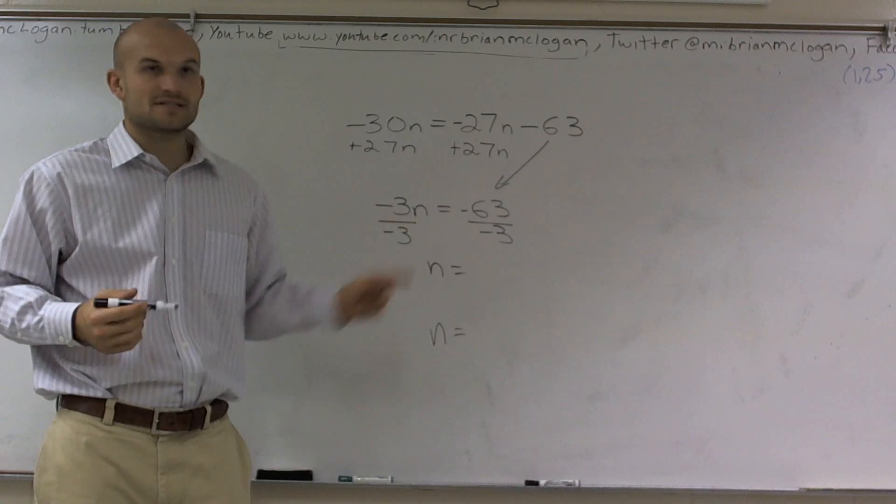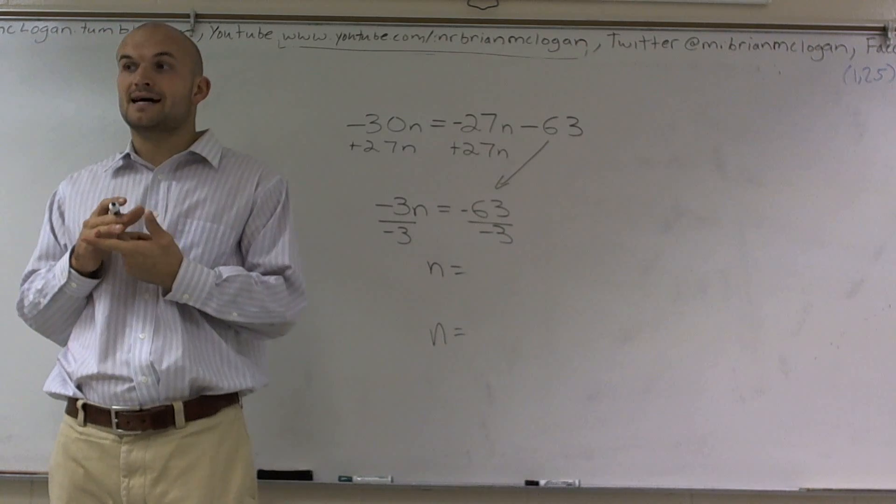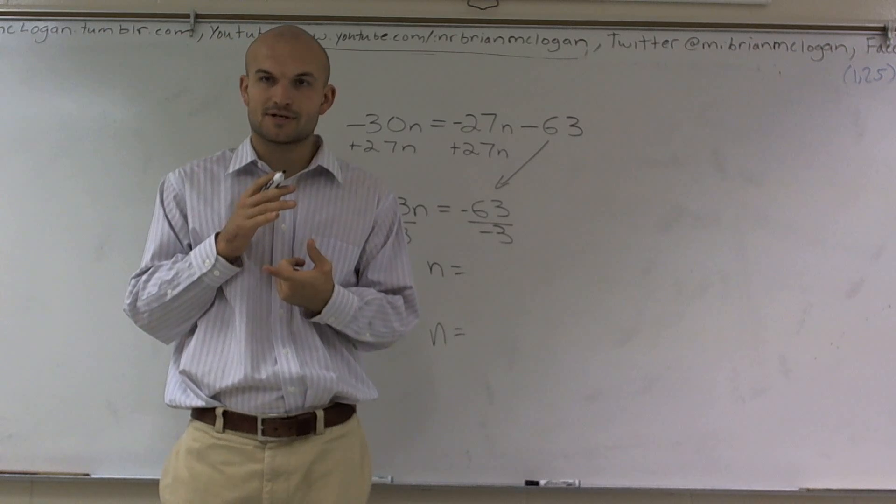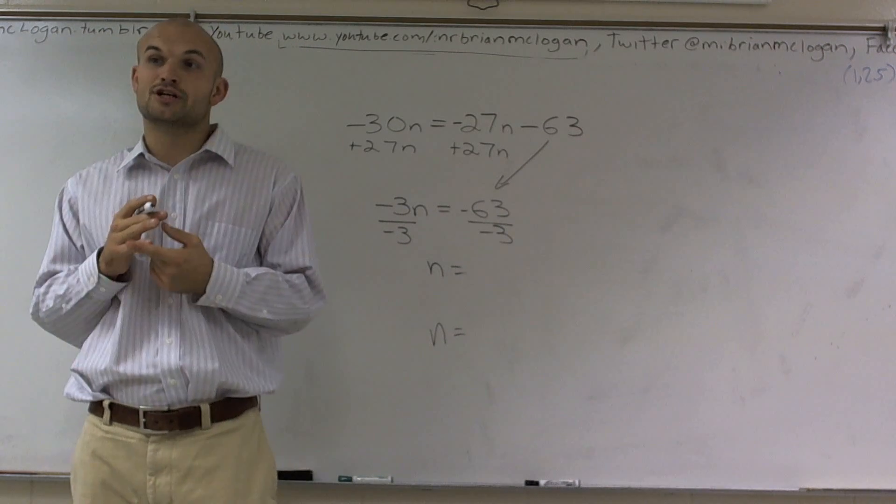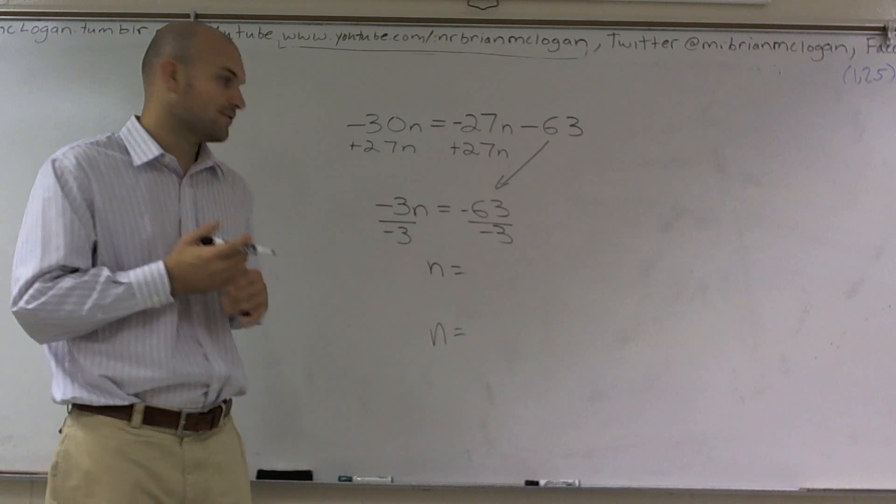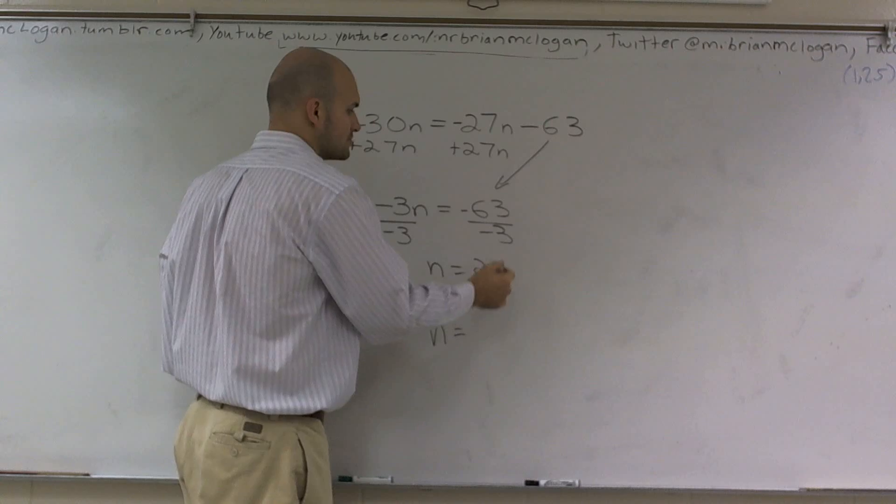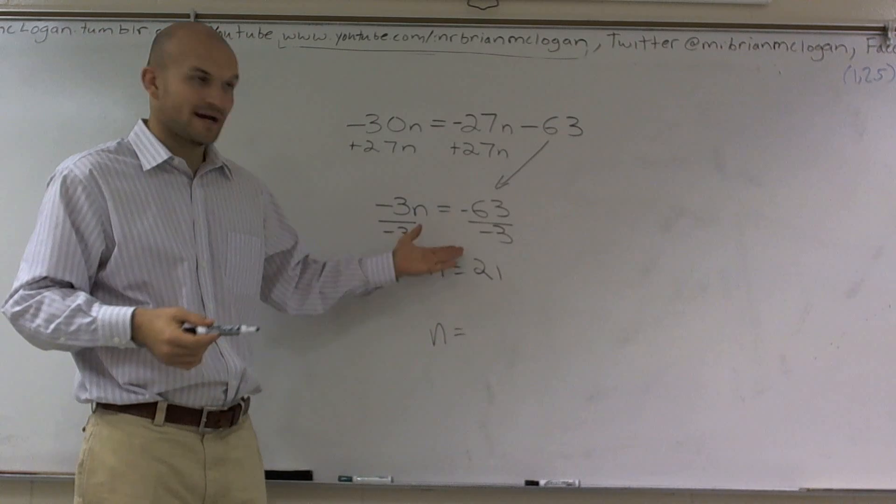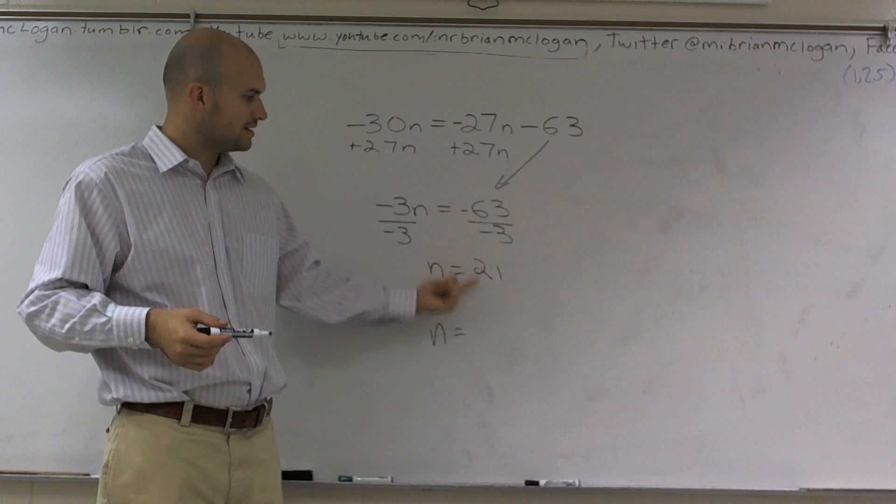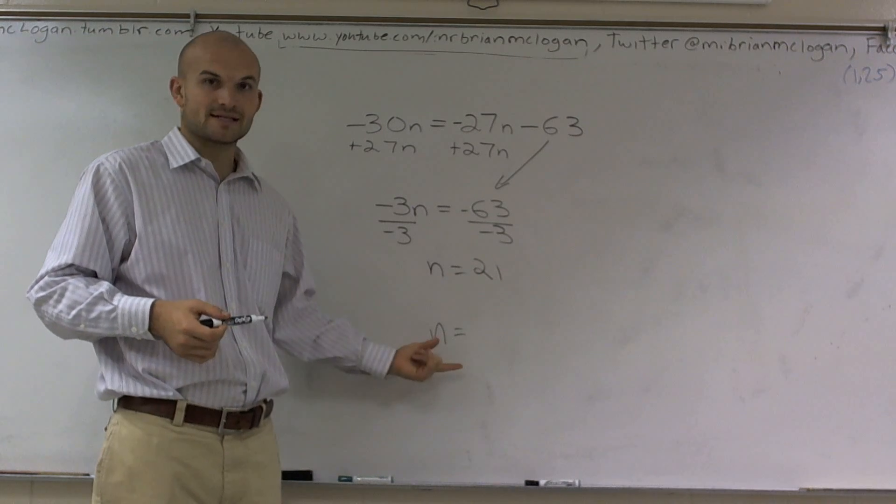That equals negative 63 divided by 3. Well, you know 3 goes into 30 ten times, it's going to go into 60 twenty times, and it's going to go into 63 twenty-one times. Since these are both negatives, it's going to give me a positive 21. So what I've done is I've systematically received my n all by itself.